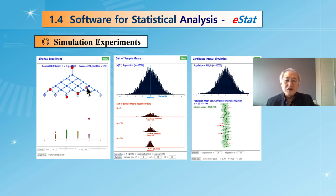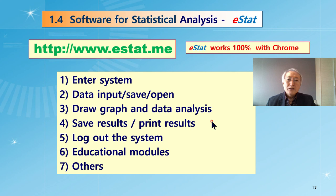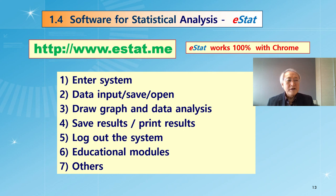There are also simulation modules: one for the binomial experiment, one for the central limit theorem, and one for confidence intervals — showing what a 95% confidence interval looks like through simulation. You can experiment by typing the URL in your web browser. Be careful: E-STED works 100% with the Chrome browser. Other browsers are generally okay, and you may use your smartphone — iPhone users can use Safari. But for data entry, you should use Chrome.